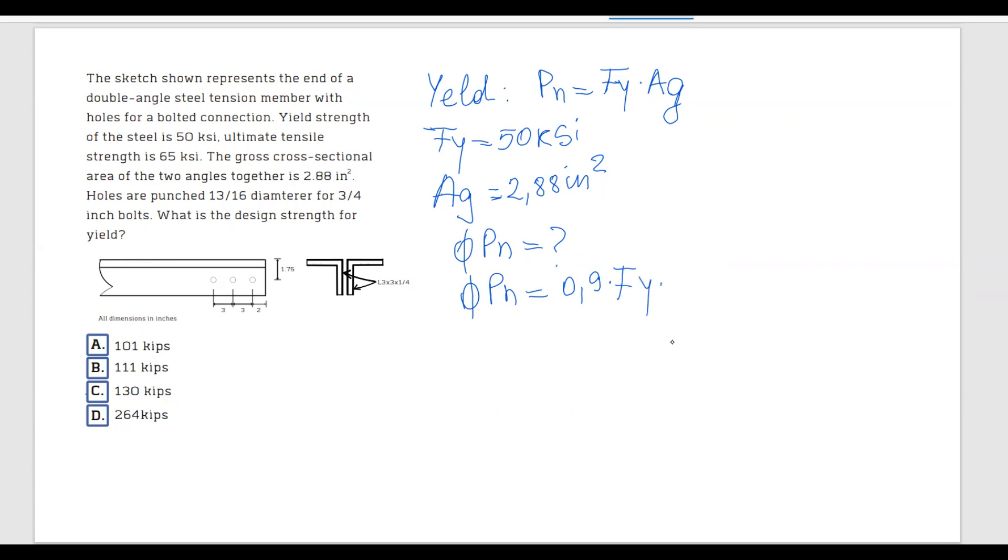times Ag. This equals 0.9 times 50 KSI, or kips per square inch, times Ag which is 2.88 inches squared.